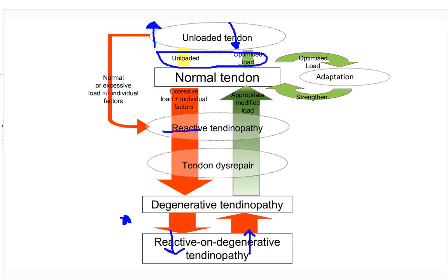We do see this pretty commonly clinically: the person who doesn't feel like they're really overloaded but has unloaded their tendon due to another injury, or has placed only a small amount of load that is a relative overload. This person might have significant individual factors — systemic conditions contributing to their presentation. This is why we can see Achilles tendinopathy in quite sedentary people because their overload threshold is much lower.